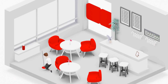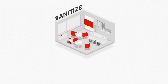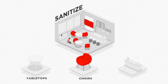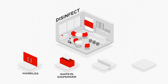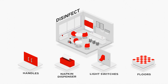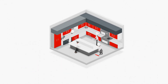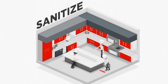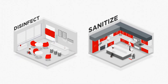When you're thinking about the dining room, use sanitizer for tabletops, chairs, and booths, while disinfectants should be used for things like handles, napkin dispensers, light switches, and floors. Food contact surfaces are sanitized; non-food contact surfaces are disinfected.